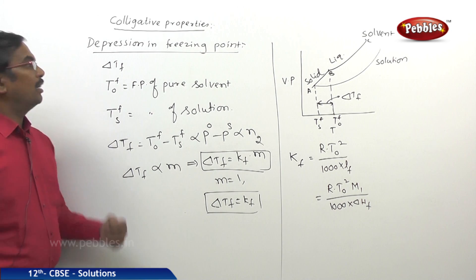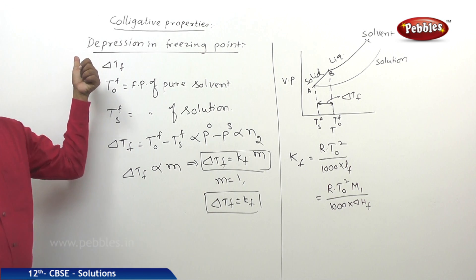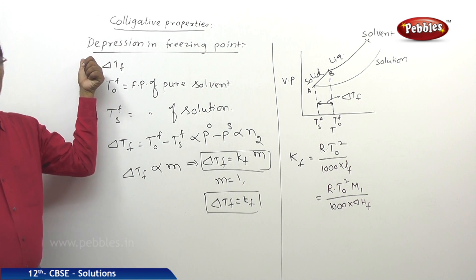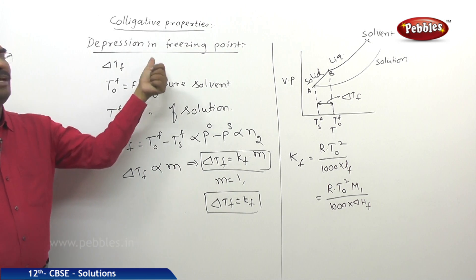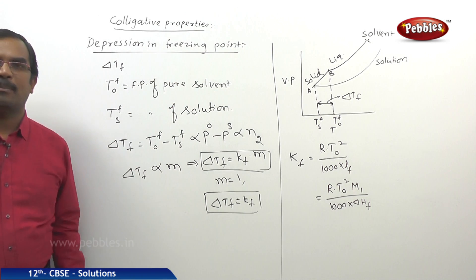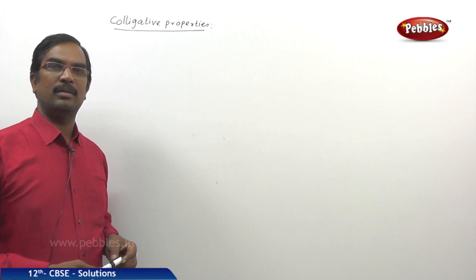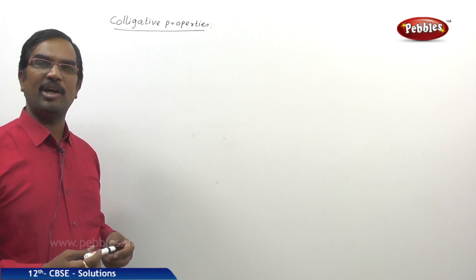Lf can also be written as delta Hf times M1 divided by 1000, where delta Hf is the enthalpy of fusion and M1 is the molar mass of the solvent. This is the third colligative property: depression in freezing point.